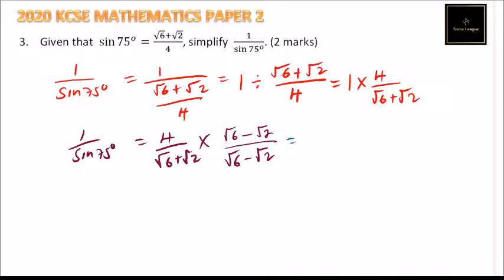So this is equal to, we multiply the numerator, 4 multiplied by root 6, that will be 4 root of 6. Then we have minus 4 root of 2.